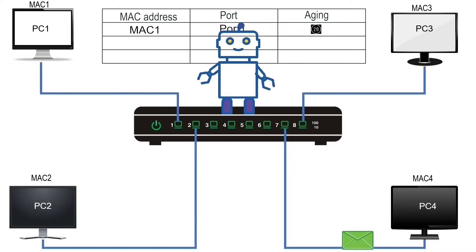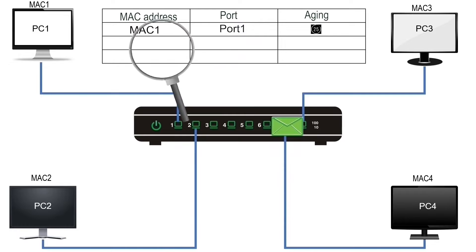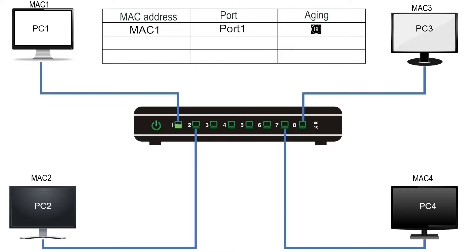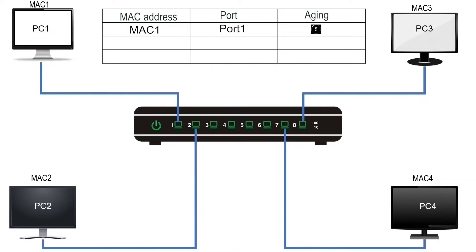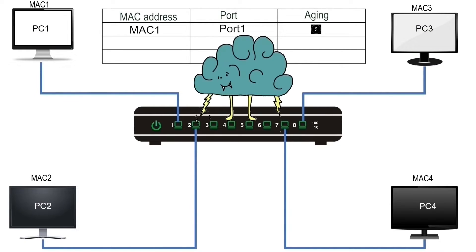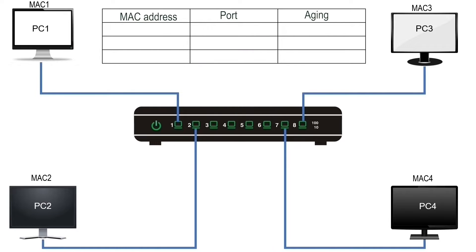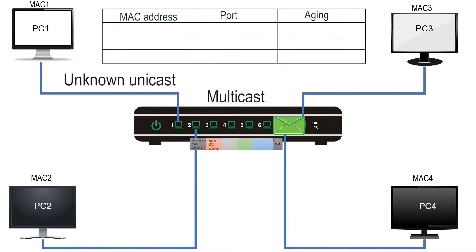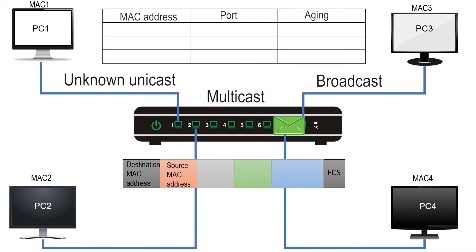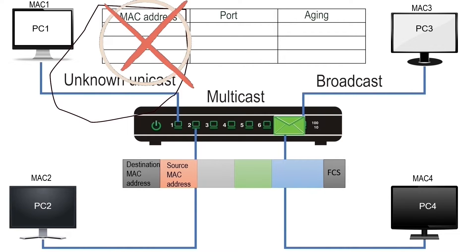A switch uses a relatively simple concept to forward a frame. It finds the destination MAC address of the incoming frame in the CAM table. If the CAM table has an entry for the destination MAC address, it forwards the frame from the port mentioned in the entry. If not, it forwards the frame from all ports except the port on which it arrived — a process called frame flooding. A switch floods a frame if it has an unknown unicast, multicast, or broadcast address in the destination field. An unknown unicast address is an address not available in the CAM table.